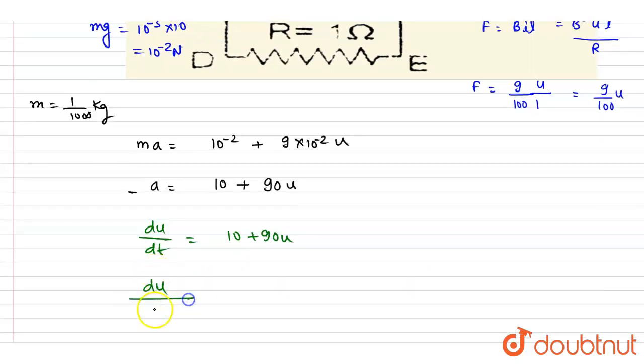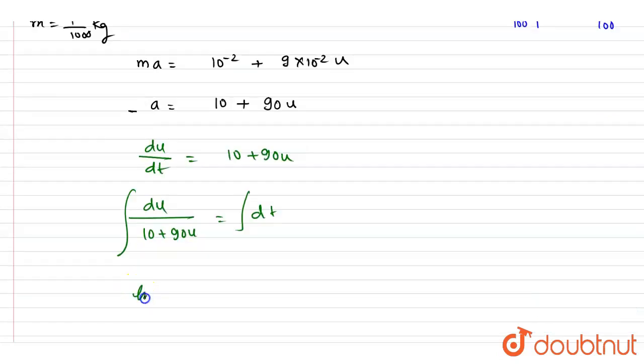So I will write down du/(10+90u) equals dt. Integration, integration. So if you see here, the integration will be ln(10 + 90u), right? And the velocity will be varying from u to 0, and dt will be varying from 0 to t, right?